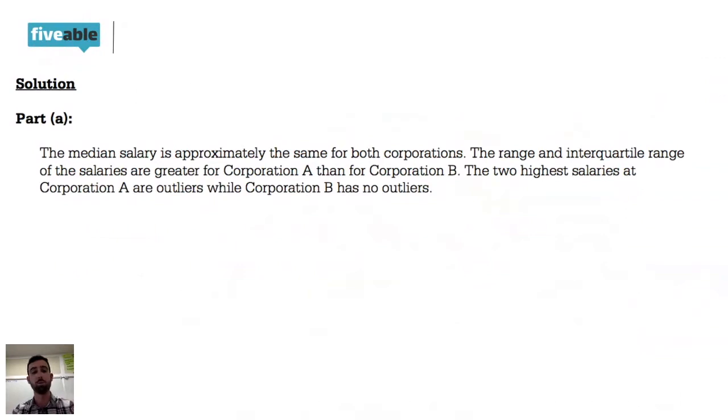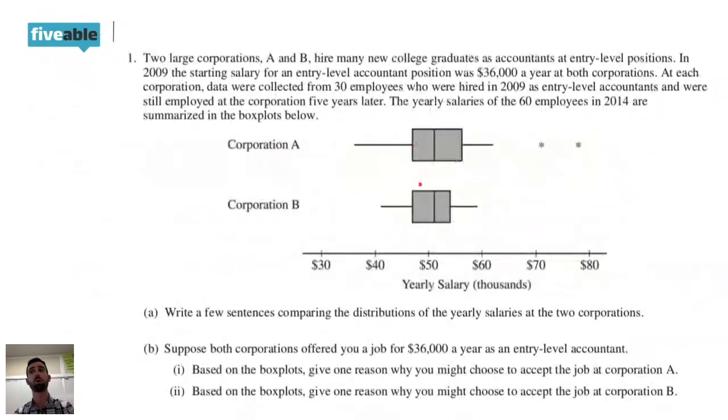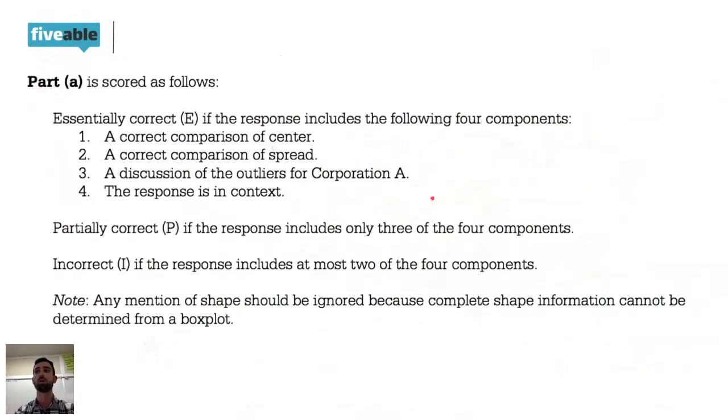Let me show you how they actually graded this problem on the AP exam. Essentially correct is the most you can get on an AP problem. Essentially correct if you included the following components: one, a correct comparison of center - it wasn't enough just to say Corporation A has a median of $50,000, Corporation B has a median of $50,000, you had to compare. You also had to compare spread - you're not getting credit if you're just saying the IQR of one is this and the IQR of the other is this. You have to compare and you don't even have to have numbers. You can just say the IQR of B is smaller than the IQR of A. Then three, you had to include outliers, talking about the outliers in Corporation A. And lastly, context - at some point you had to talk about the salary of the companies or what we were actually talking about.